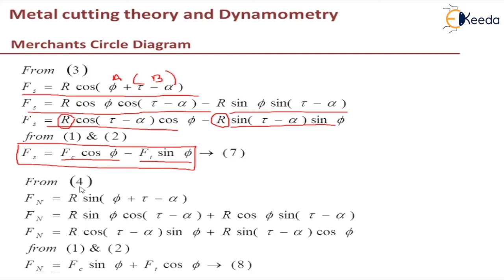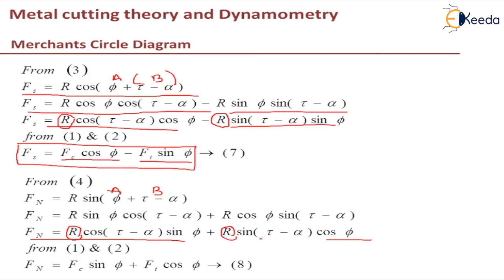Similarly, using equation 4, Fn equals r sin(phi plus tau minus alpha). Taking A equals phi and B equals (tau minus alpha), and applying sin(A plus B) equals sin A cos B plus cos A sin B, I expand to get Fn equals r cos(tau minus alpha) sin(phi) plus r sin(tau minus alpha) cos(phi). Substituting r using equations 1 and 2, the equation for normal force becomes: Fn equals FC sin(phi) plus FT cos(phi).